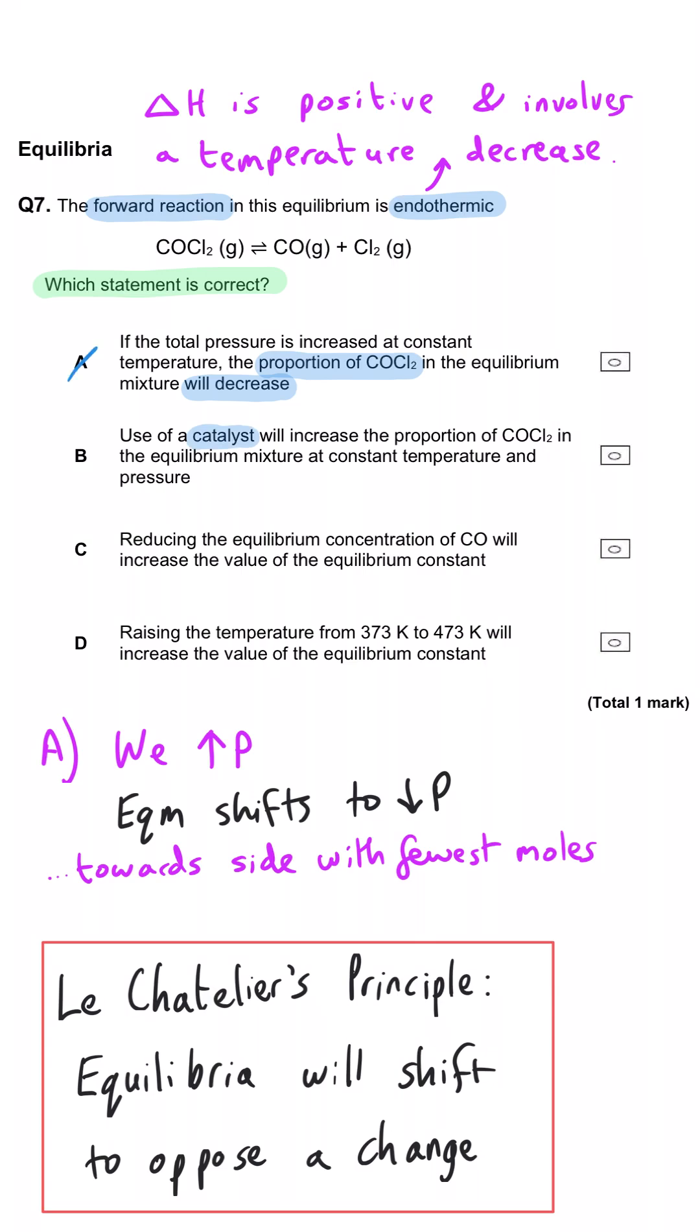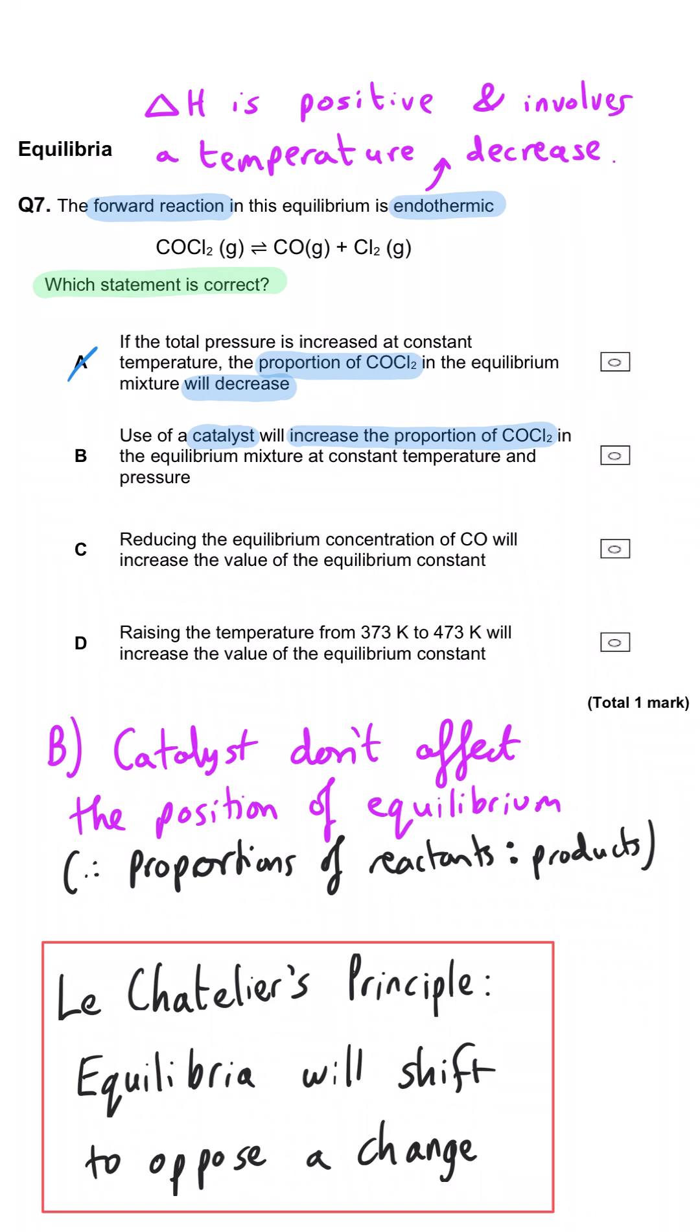Use of a catalyst will increase the proportion of COCl2 in the mixture at constant temperature and pressure. No, using a catalyst does not affect the proportion of any of the chemicals because it speeds up the forwards and the backwards reaction equally.